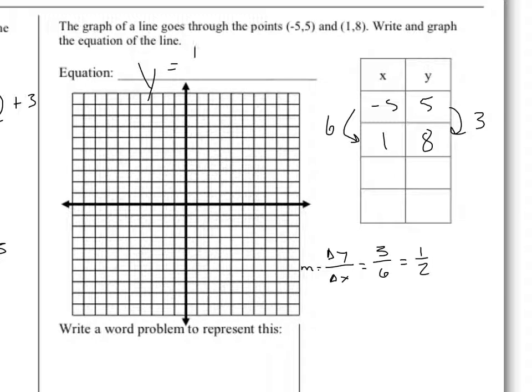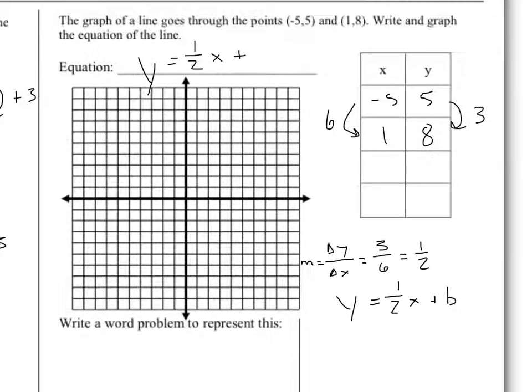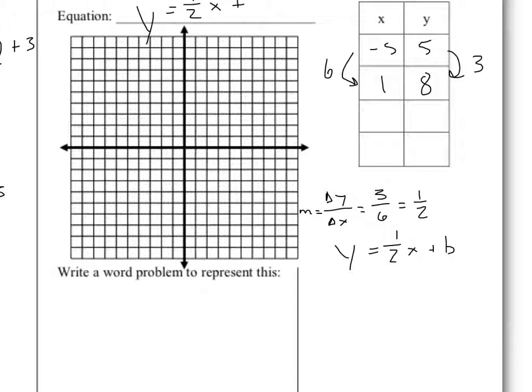So my equation is y equals 1 half x plus, I don't know, so I'm going to have to come over here. y equals 1 half x plus b. I'll plug in one of my coordinate pairs. I like dealing with this all positive stuff over here, so I'm actually going to use this one instead of the first one. It doesn't matter which pair you use.